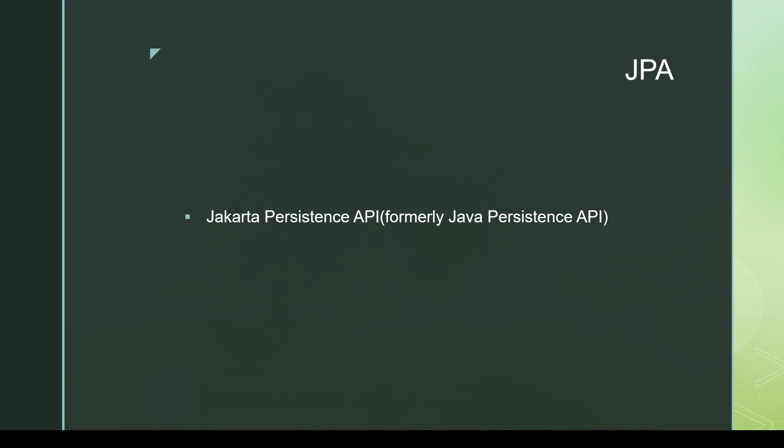JPA was known as Java Persistence API but has been renamed to Jakarta Persistence API. JPA is a standard which specifies what an ORM framework should do and how it should work — it's about guarantees and correctness of a program. Vendors are free to use their own implementations, so if JPA defines something, Hibernate can choose its own implementation and TopLink may do it differently, but they still need to provide that guarantee.